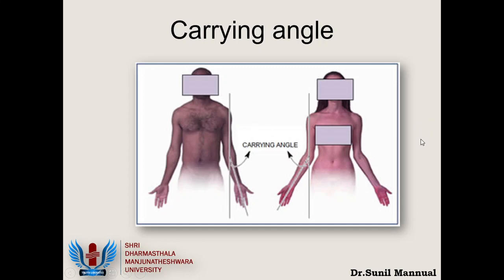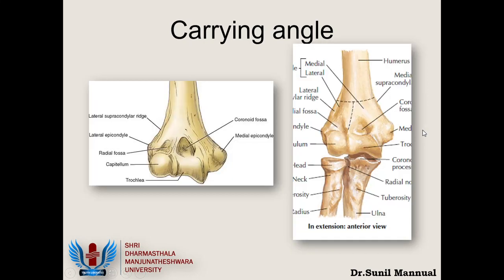Why does the carrying angle exist, and why does it disappear in flexion? The carrying angle is caused by the articulation between the trochlea and the upper end of the ulna. There is a tilt in the trochlea — going from lateral to medial the trochlea tilts downwards. In extension, the undersurface of the trochlea contacts the upper surface of the proximal ulna, and because of this tilt, the ulna tends to go outwards, creating the carrying angle.